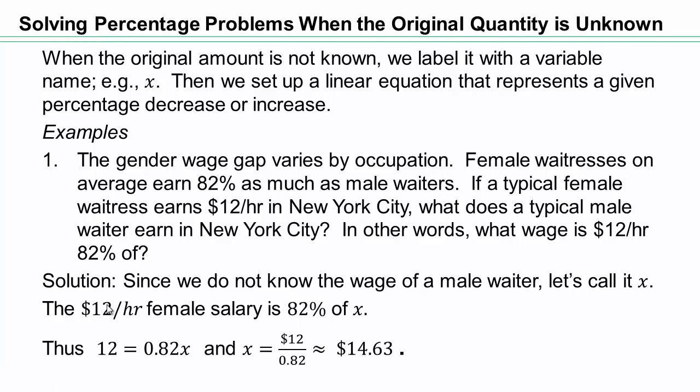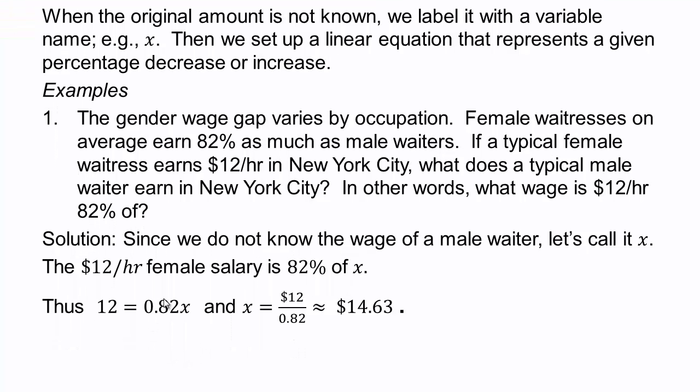So you have 12 is equal to .82x. That's the multiplication giving you percent. And now we've seen how to isolate the variable x. You'd have to divide both sides by .82. And so that would be your answer. You also know how to do this long division. So that would be about $14.63.